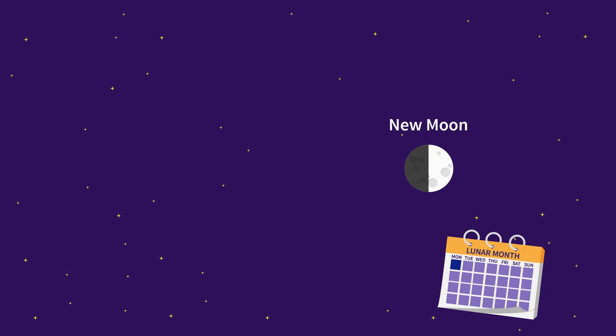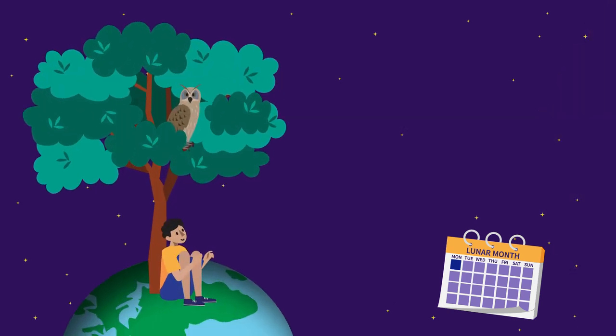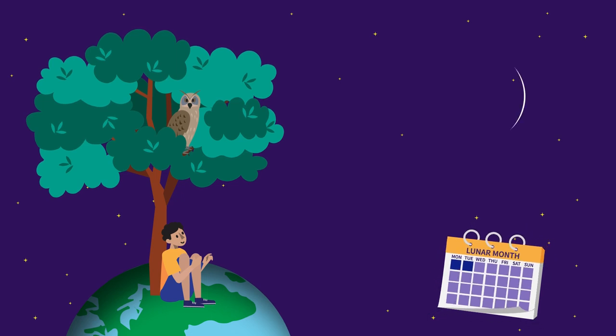During this phase, the moon is between the Sun and Earth, and all of its lighted side is facing the Sun while the dark side faces Earth. That's why we cannot see the new moon.